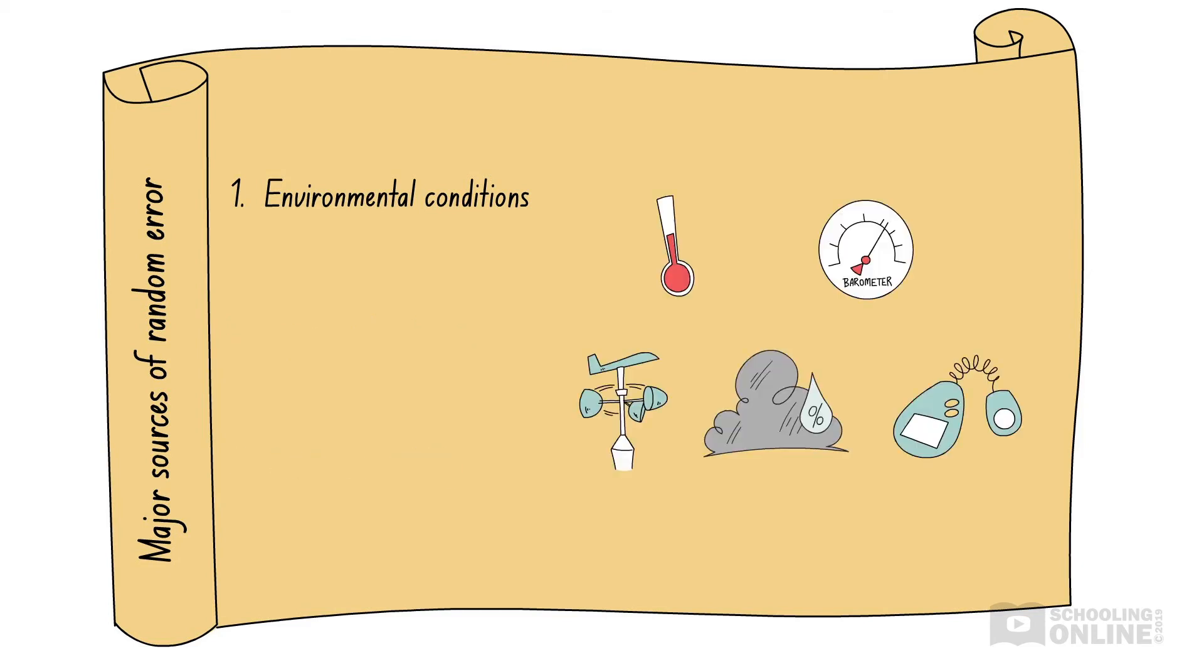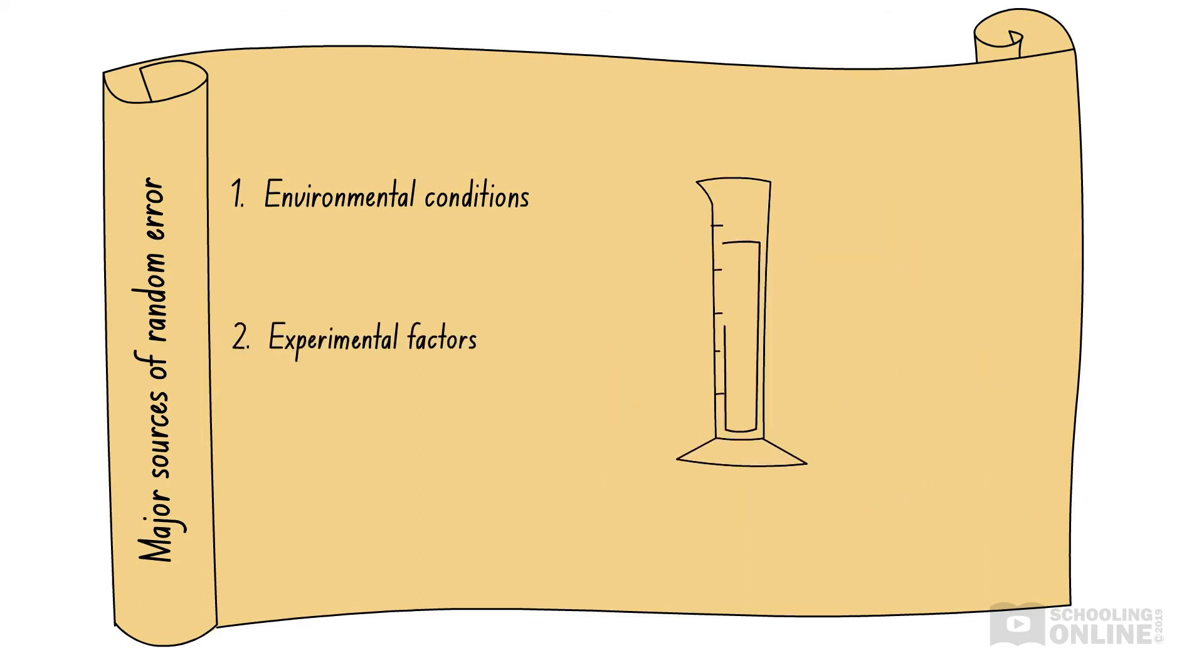Environmental conditions include variables such as temperature, atmospheric pressure, wind speed, humidity, and light intensity. Experimental factors are associated with the materials and apparatus used in the experiment, such as the masses and volumes of chemicals.